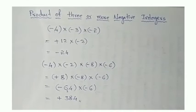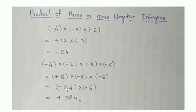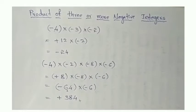So whenever we get 3 or more negative integers, we have to solve step by step by taking two integers at a time.